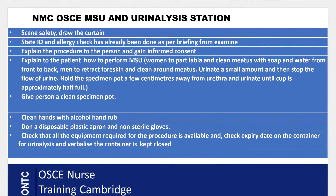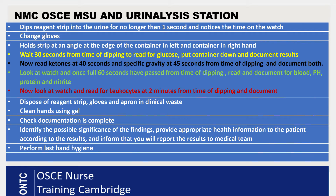Make sure your watch is on the table for timing. Take one strip out of the container and close the lid again immediately. Dip the strip so that all pads are submerged in the urine sample for no more than one second, verbalizing as you do this. My big tip: let the clock reach a full minute before dipping — this makes it much easier to work out your 30, 40, 45, and 60-second time points.